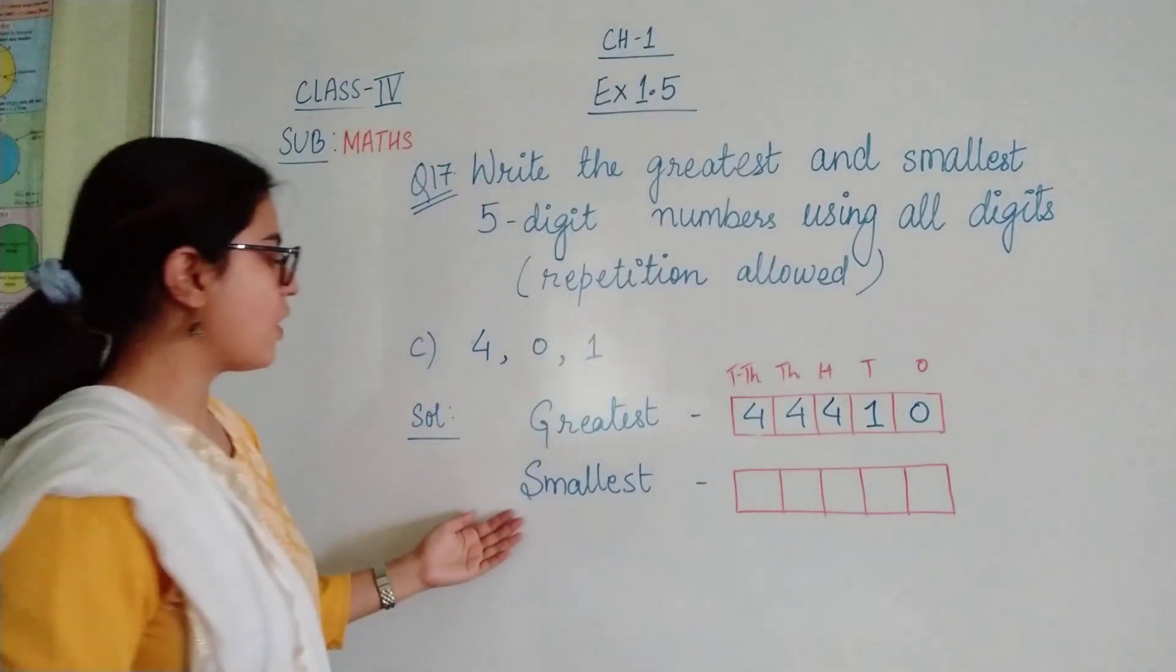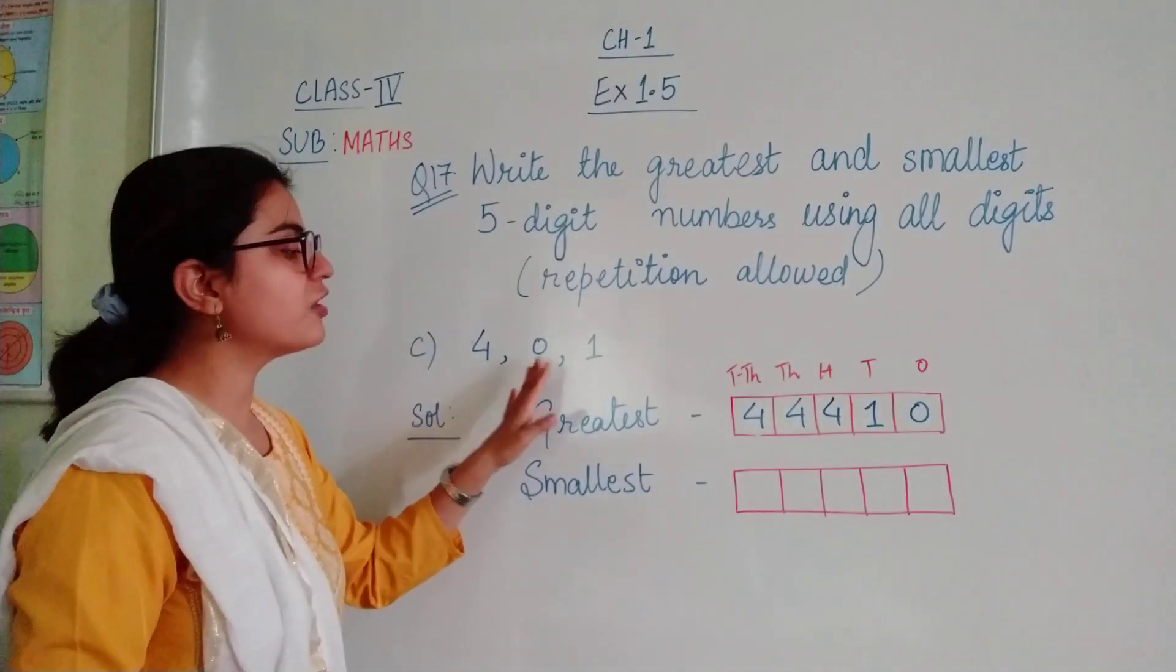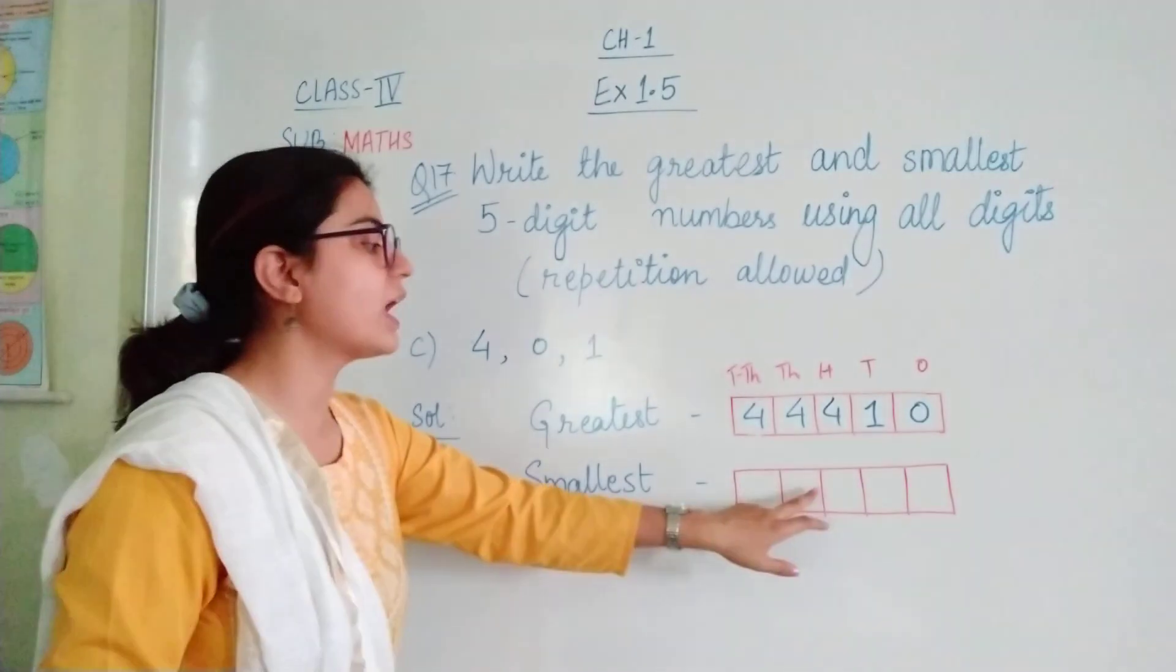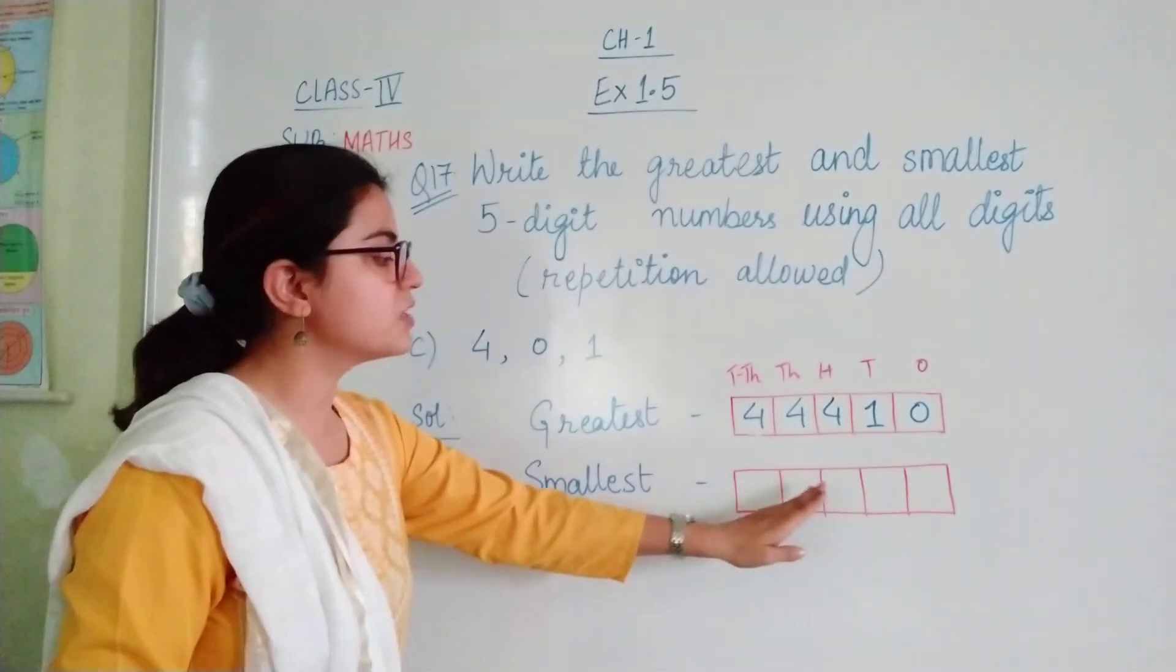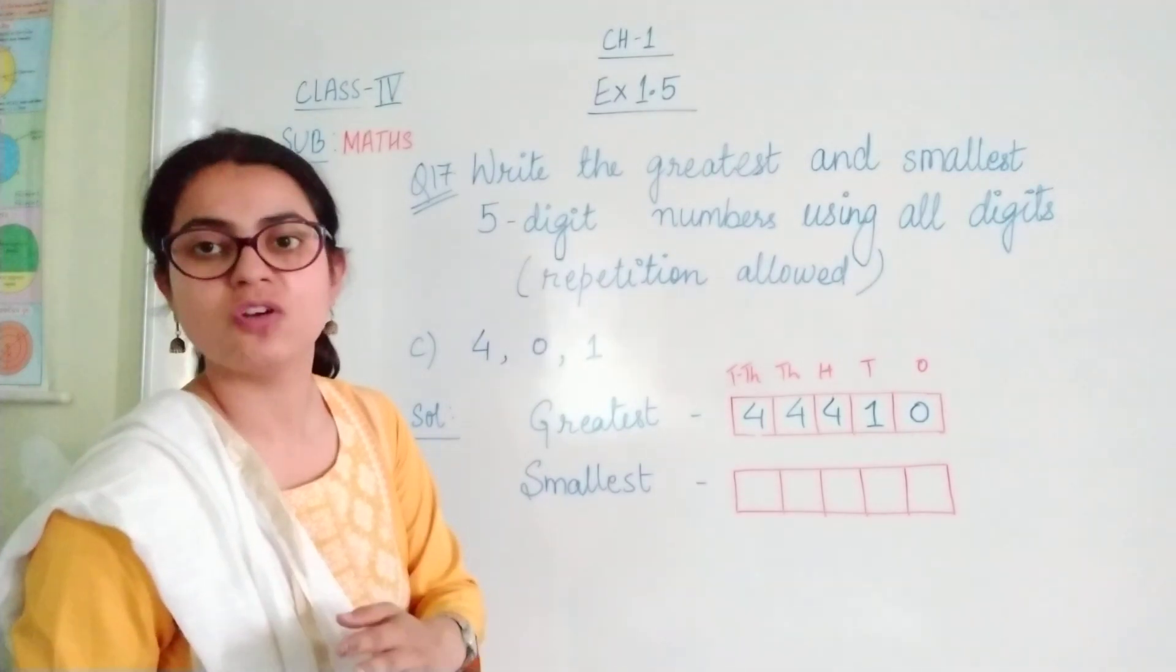Now coming to the smallest one. How do we do? We cannot repeat 0 at these place values. Because if 0 is above any number, it does not add to the value of the number.